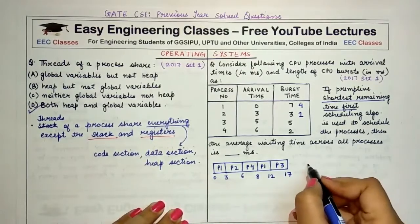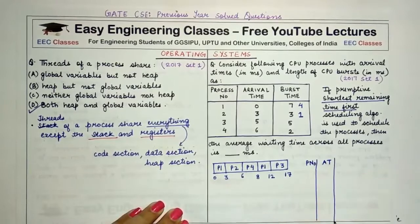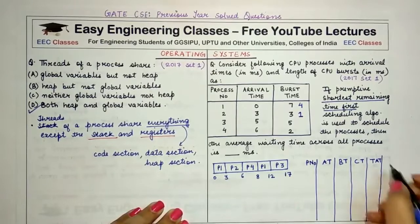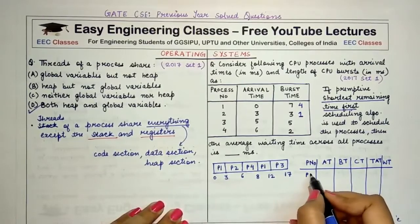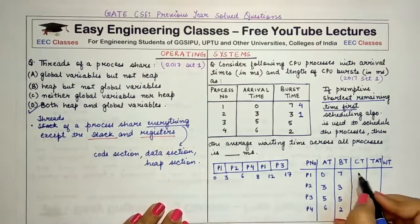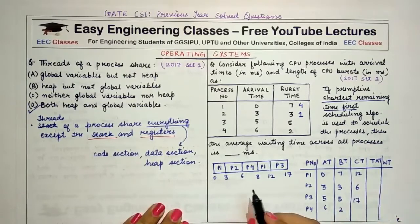Now let's build the table. Arrival times (AT): P1=0, P2=3, P3=5, P4=6. Burst times (BT): P1=7, P2=3, P3=5, P4=2. Completion times (CT): P1=12, P2=6, P3=17, P4=8. Turnaround time = CT − AT: P1=12, P2=3, P3=12, P4=2.